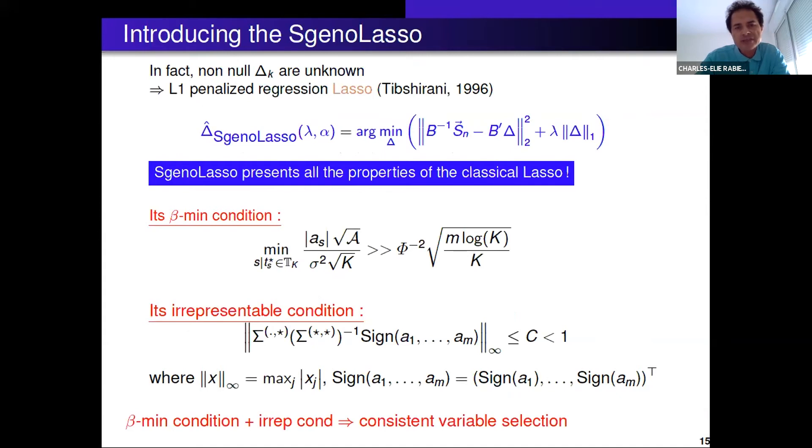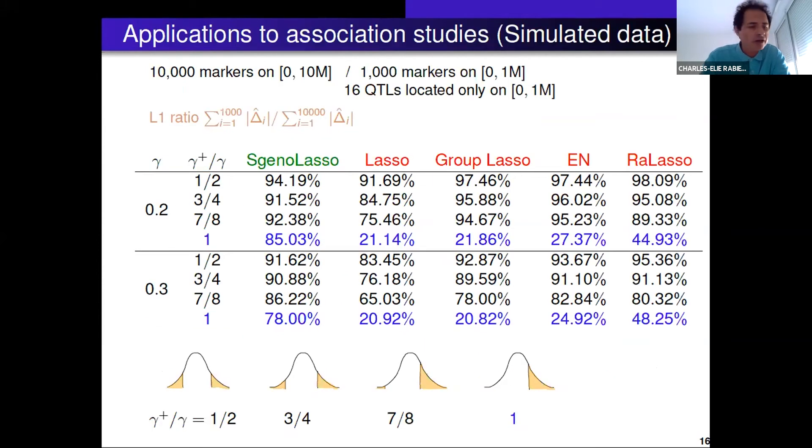Next, in order to build the SG no lasso, you just need to do L1 regularization. You take your observed score values, you have the mean function here, and you have your penalty here. Since we have placed the problem in the lasso context, the lasso framework, we have all the properties of the classical lasso. The Irrepresentable Well Condition ensures consistent variable selection. The key point here is that we have handled the dependency between the phenotype and the alleles at markers, which is not the case of the classical lasso.